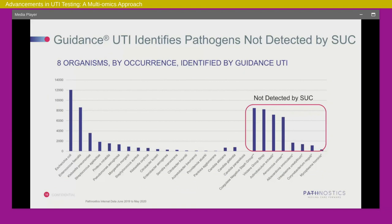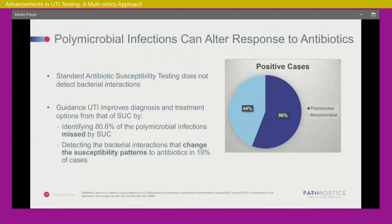Looking at the data: there is a group of organisms not detected by standard urine culture that we are seeing using this methodology, suggesting a significant miss using standard urine culture compared to molecular methodologies. This miss often manifests itself in missing what would otherwise be termed polymicrobial infections. When we look at patient populations above age 65, we find a significant proportion of polymicrobial cases — about 56% of all cases identified in this population are polymicrobial in nature. When we compare this methodology to standard urine culture, we see that standard urine culture misses about four out of every five polymicrobial infections.